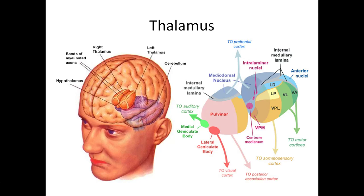The thalamus is sort of a signal and control center — a relay station. It sends signals out and takes signals in from different parts of the body, organizing control.